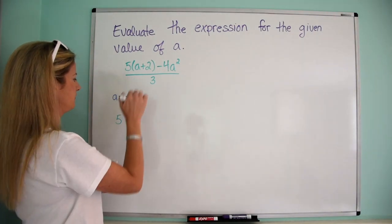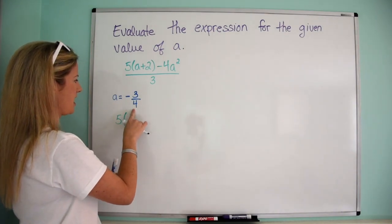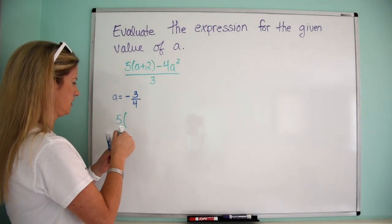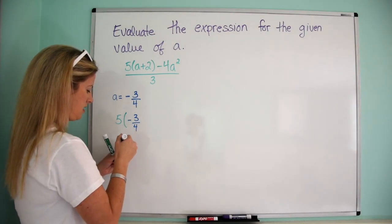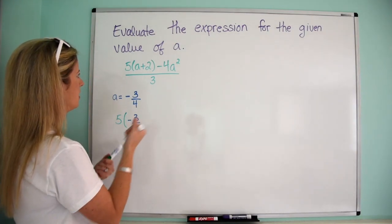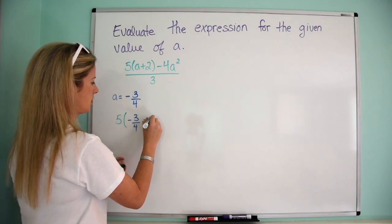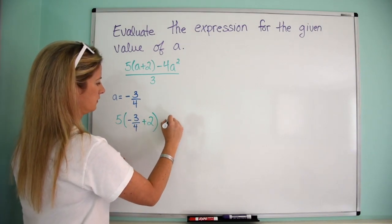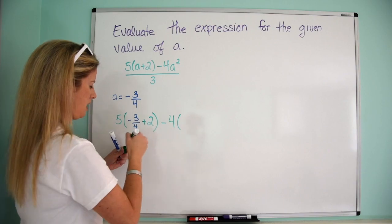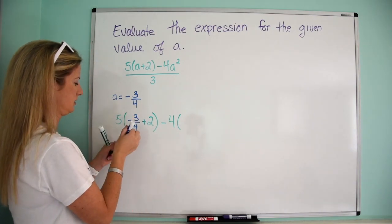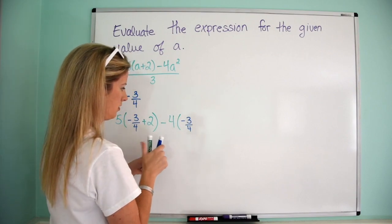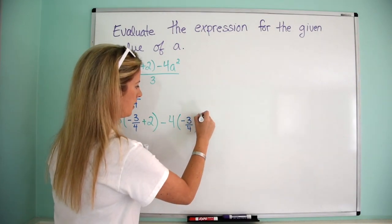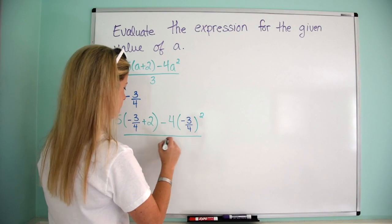Alright, so we're going to do 5 times, and then remember a is negative 3 fourths, so we're going to put that in negative 3 fourths, and then plus 2, and then minus 4 times a squared, so a is negative 3 fourths, and then we are going to square it, perfect, and then the whole thing is over 3.